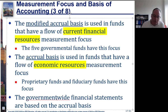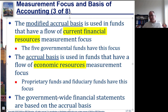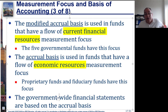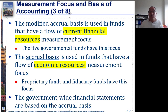The government-wide financial statements, which encompass everything including the governmental funds, are going to be based on the accrual basis. So governmental funds really need to be kept track of in two different ways: the funds themselves follow the modified accrual basis, but they need to be adjusted later to a full accrual basis so that government-wide financial statements can be prepared.